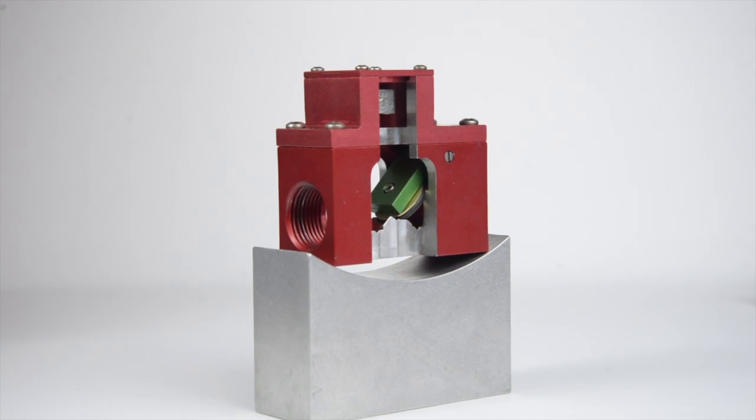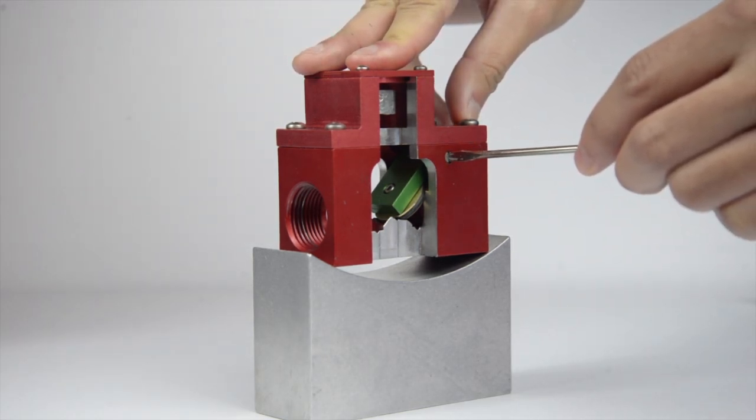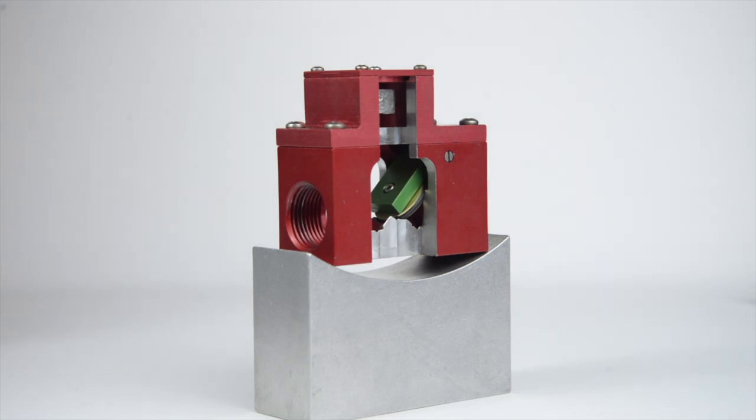By holding the screwdriver in place after turning, you can ensure that the magnet in the flapper will catch. You can take a look into your sight glass and see that the valve is open as denoted by the color green.